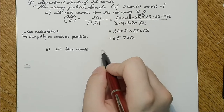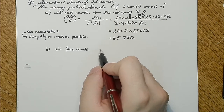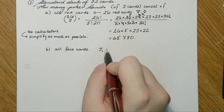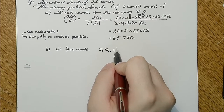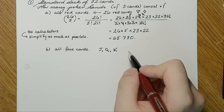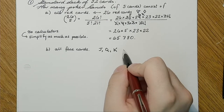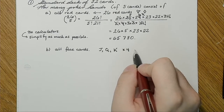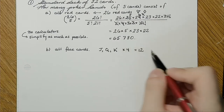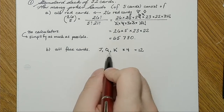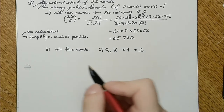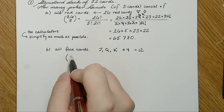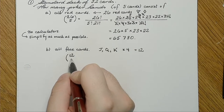This one says all face cards — that would be the Jack, Queen, and King, so that's 3 cards times 4 suits, which gives you 12 cards. So now I'm choosing 12 cards, choose 5.